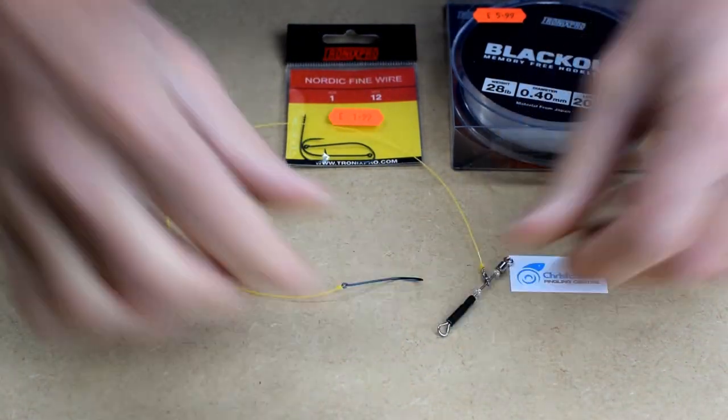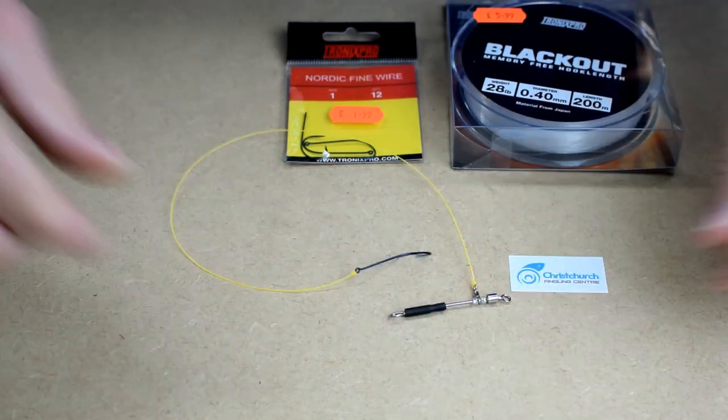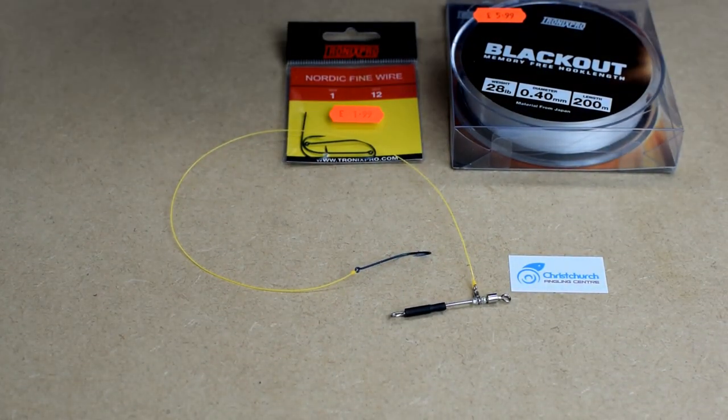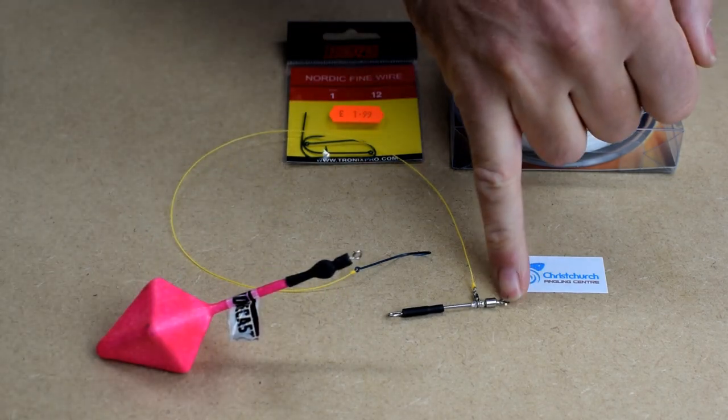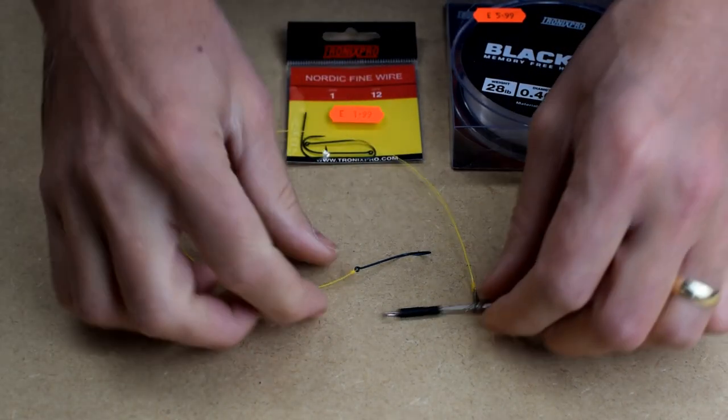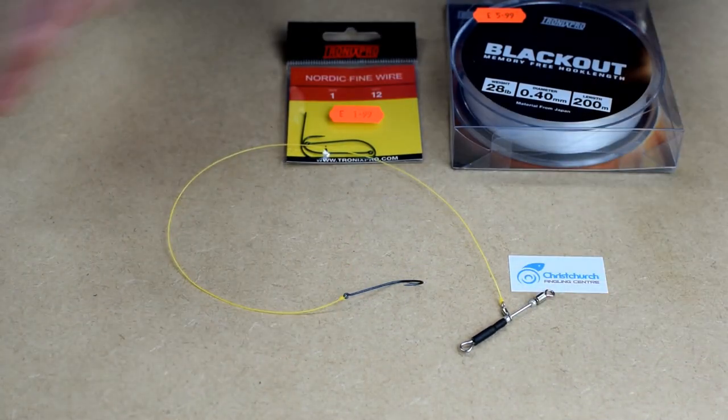Now that, as simple and basic as it may look, is an earth rig. Got your earth clip, which we'll have our lead attached to down there, swivel at the top for your shock leader, you length the line to your hook. That's it. That is simple.